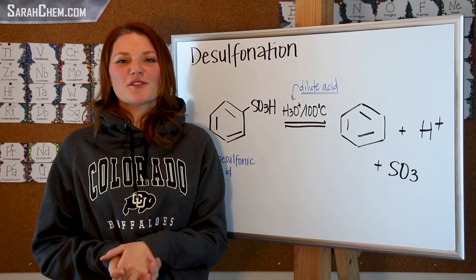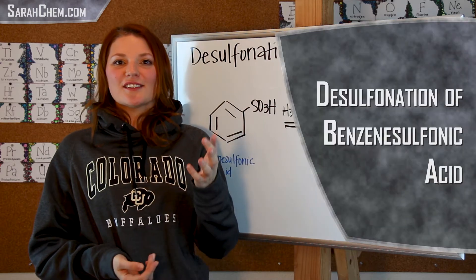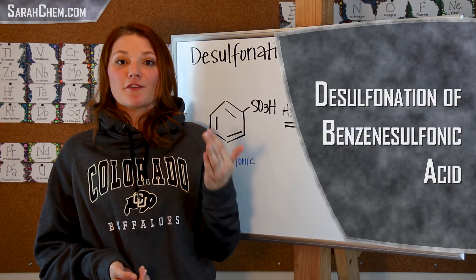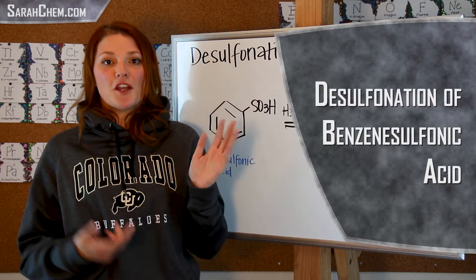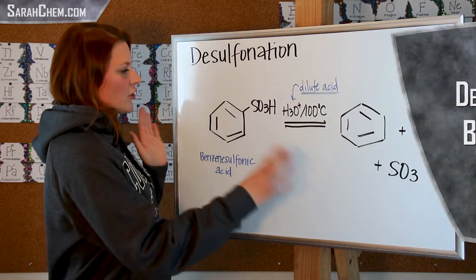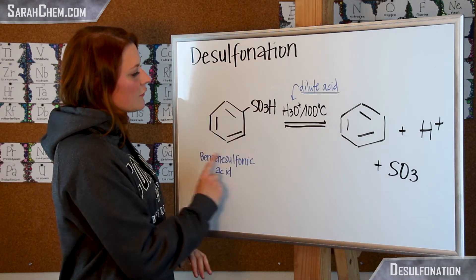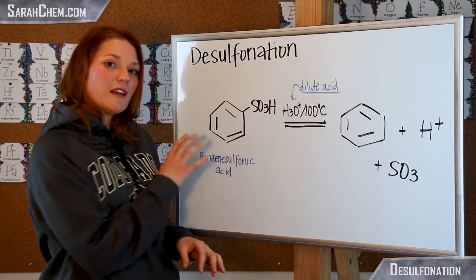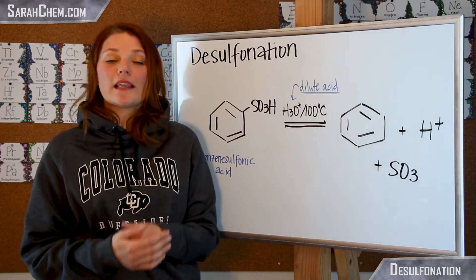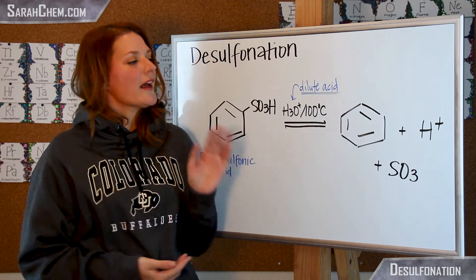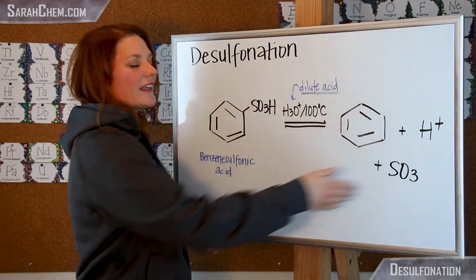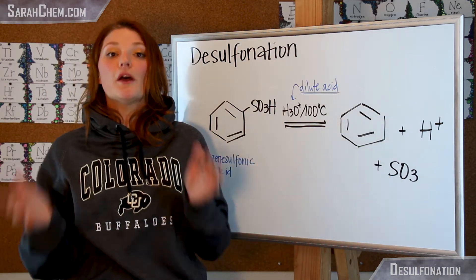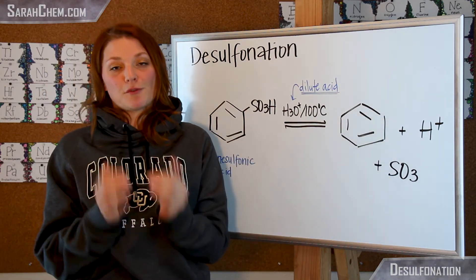Hi everyone. In this video tutorial I'd like to take a look at the desulfonation of benzene sulfonic acid. So if we take a look at the general layout, what we have is benzene sulfonic acid right here, and if you take that compound and you heat it in dilute acid, what you're able to do is essentially eliminate that sulfonic acid group from your benzene ring.